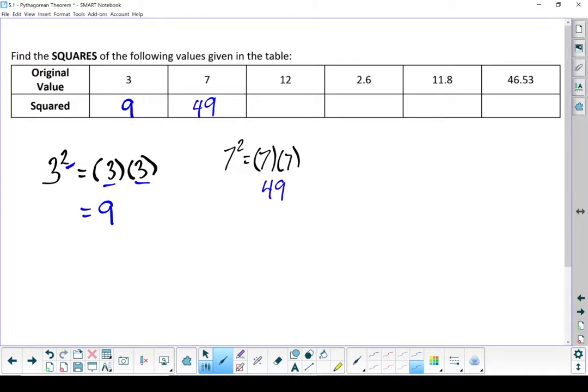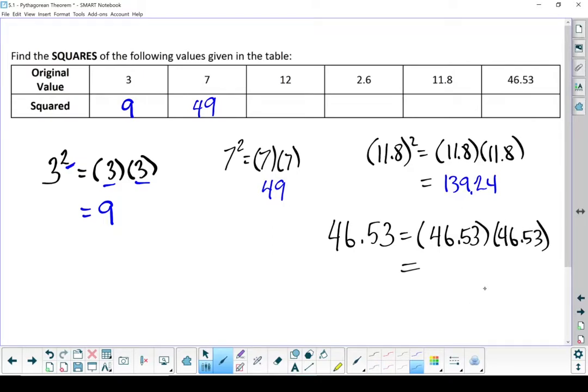I'm going to jump to the last two. It's exactly the same if you're working with a decimal. 11.8 squared is the same as 11.8 times 11.8, which is 139.24. Let's end it off with the last one. 46.53, well, it's times itself. It is 2165.0409. Keep in mind, squares can start getting large fast.